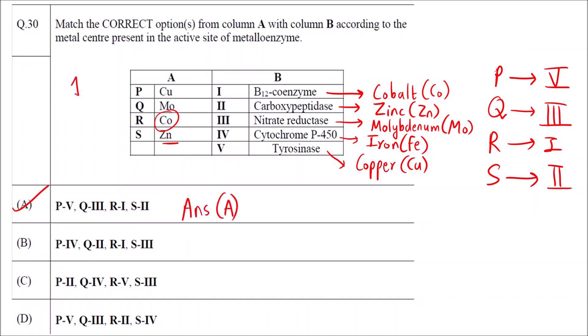This is the question for one mark. You can also use the elimination method to answer this question. Suppose you don't know some enzymes like nitrate reductase or tyrosinase, these are new names which we generally don't study.